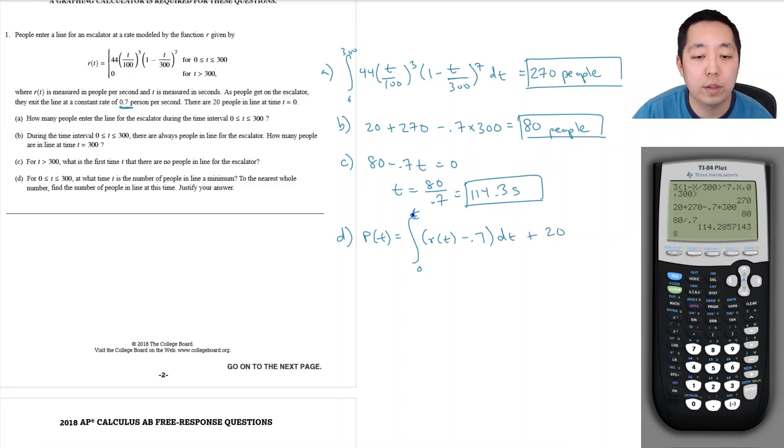The minimum occurs when the first derivative is equal to zero. By fundamental theorem of calculus, the derivative is just r(t) minus 0.7, so my critical points occur when r(t) equals 0.7. I'm going to plot r(t) minus 0.7.